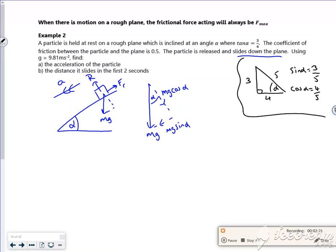So this mg cos alpha is actually four fifths of mg, and that mg sine alpha is actually three fifths of mg. Remember my components. So let's solve it perpendicular to work out what R is to help us with F_max.